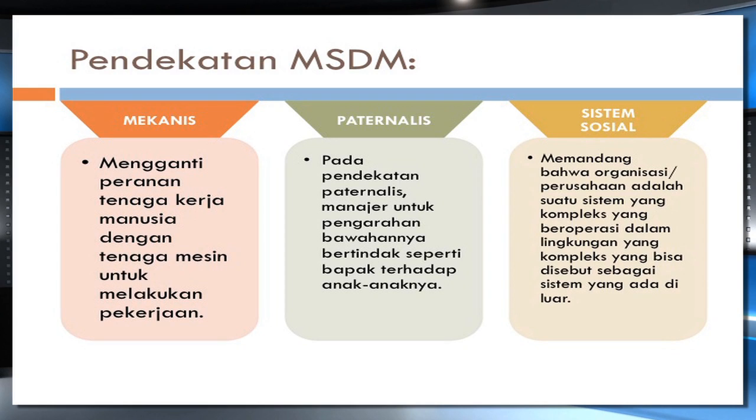Ketiga, pendekatan sistem sosial. Pendekatan sistem sosial ini memandang bahwa organisasi atau perusahaan adalah suatu sistem kompleks yang beroperasi dalam lingkungan yang kompleks, yang bisa disebut sebagai sistem yang ada di luar. Manajer mengakui dan menyadari bahwa tujuan organisasi atau perusahaan baru akan tercapai jika terbina kerjasama yang harmonis antara sesama karyawan, bawahan dengan atasan, serta terjadi interaksi yang baik di antara semua karyawan. Pemikiran ini didasarkan pada adanya saling ketergantungan, interaksi dan keterkaitan di antara sesama karyawan.